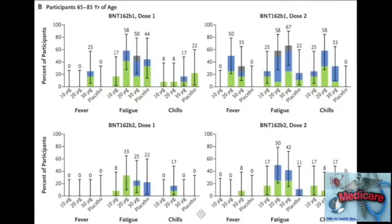If you look at participants in the 65 to 85 years of age group, you can see how the second vaccine, or B2, had far fewer side effects than B1.